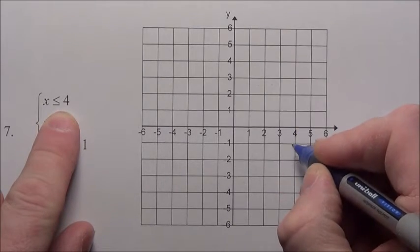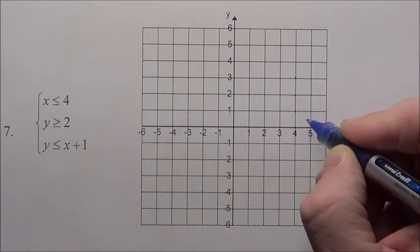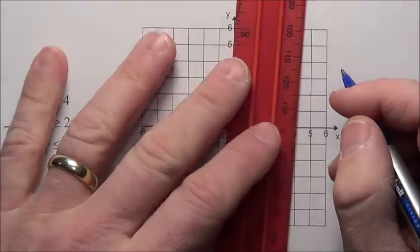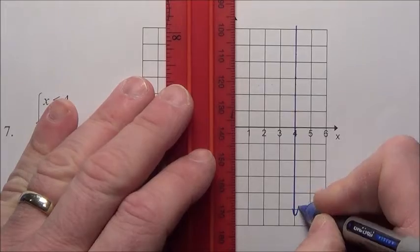That means every x value, x always has to be 4. So here, coordinates like (4,0), (4,1), (4,2), (4,3), x is always 4. So that line is basically a straight line, straight vertical line right here at 4.